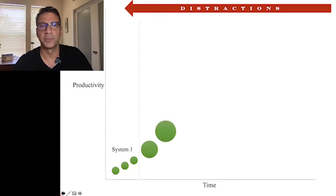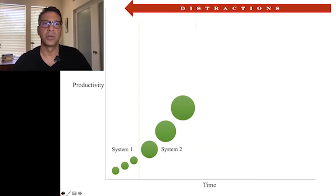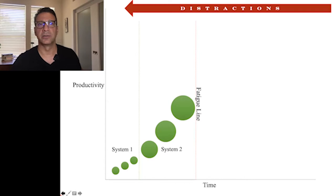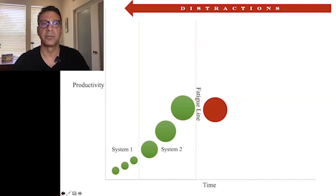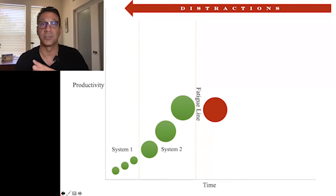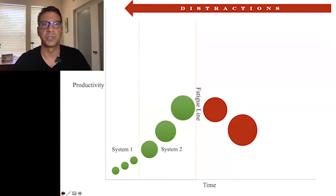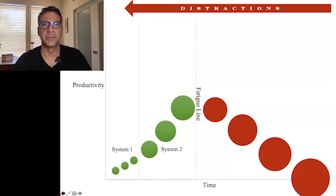Often, more effort is required, and you see more productivity that way — and that gets into system two thinking. One of the things that can happen is that people don't realize that because it requires effort and time, you eventually will get tired. You'll hit a fatigue line. What sometimes people do is they'll keep putting the same amount of effort into the process, but then productivity keeps lagging. That causes people to get frustrated, and they put in more effort and see less productivity, causing more frustration.